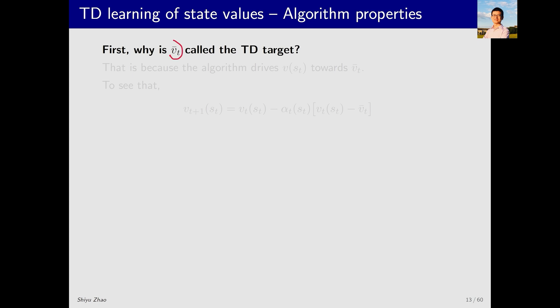First, why is V_t bar called the TD target? This algorithm aims to steer V(s_t) towards V_t bar. That is, at the next time step, V(s_t) will be closer to V_t bar. Therefore, V_t bar is its target value. This is why it is called the TD target.